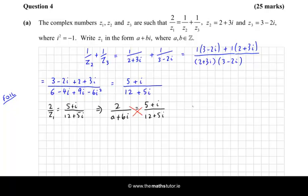So I have 2 multiplied by 12 plus 5i, and that's going to be equal to a plus bi multiplied by 5 plus i. So I'm going to multiply out both sides and then match the real and the imaginary parts. So on the left, I get 24 plus 10i.